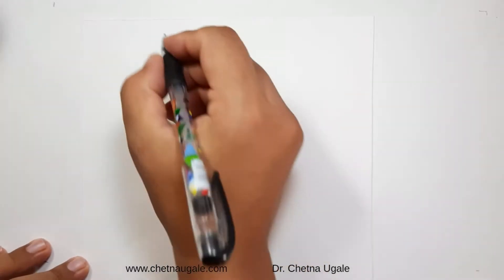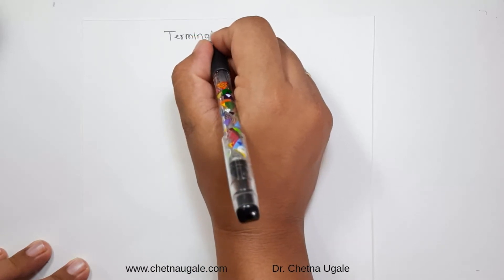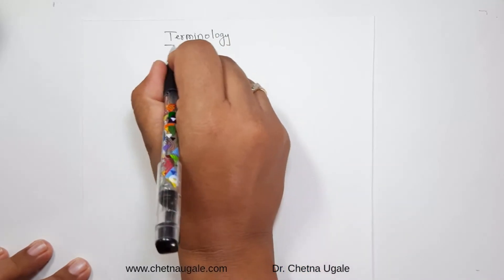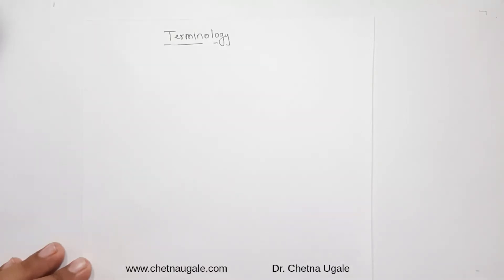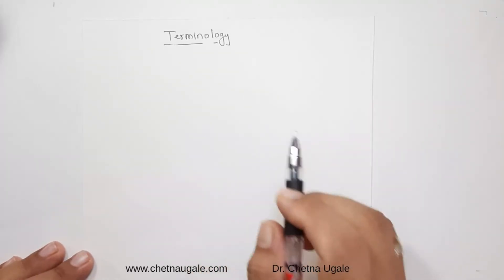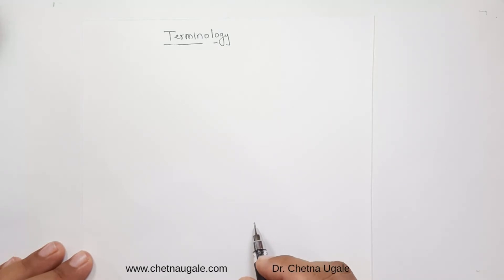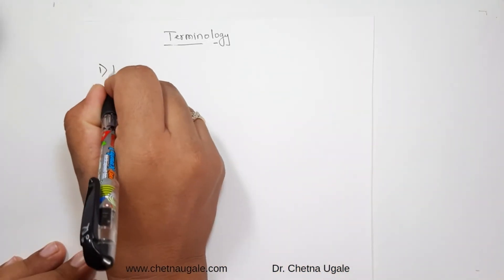Good morning students. Today we are going to learn terminology generally used for the description of flowers and plants. This terminology gives the description of the morphology of flowering plants. Any botanical analysis of a plant needs some information — descriptive information that is generally defined in certain technical terms. Today we are going to see the terminology used for the morphological description of flowering plants. The first terminology is habit.